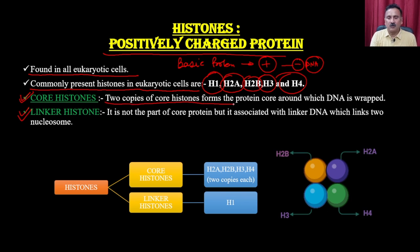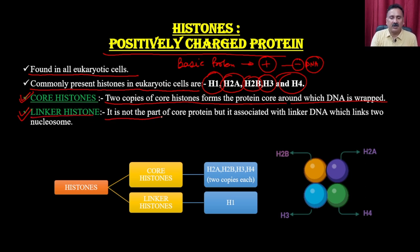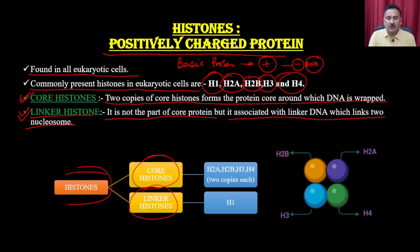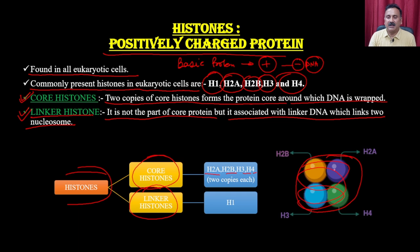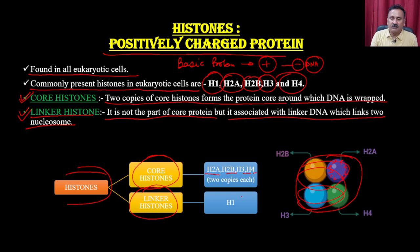Two copies of each core histone form the protein core around which the DNA is wrapped; H2A, H2B, H3, and H4 make up this core. The linker histone H1 is not part of the core but is associated with the linker DNA that connects two nucleosomes. The core histone surface is positively charged, giving it very high affinity for the negatively charged DNA.